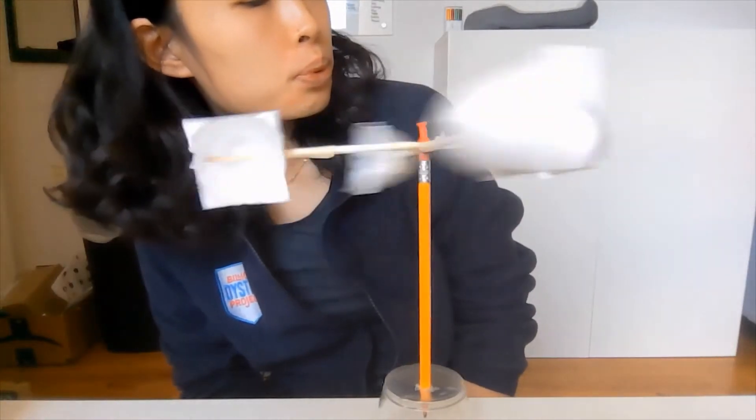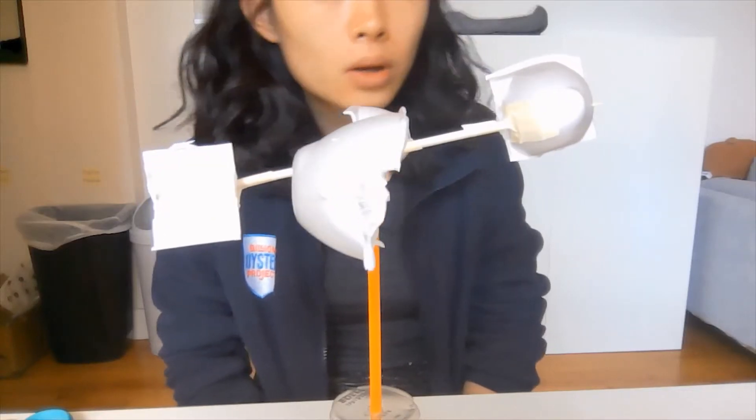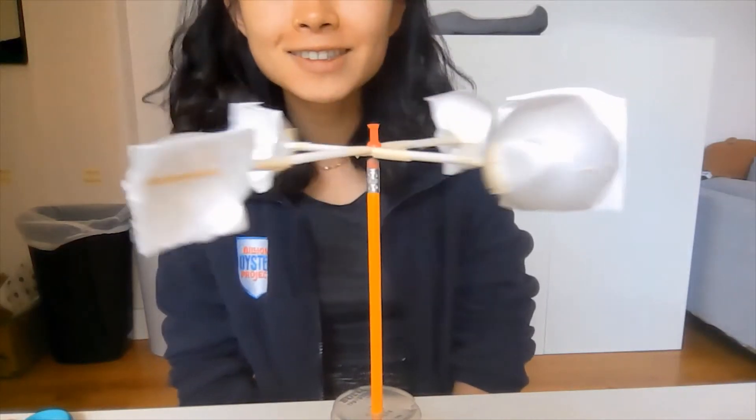How to make a do-it-yourself anemometer. An anemometer is a device used for measuring wind speed. Today we will be making a simple hemispherical cup anemometer, which measures wind speed by the number of revolutions its cups make per given time.